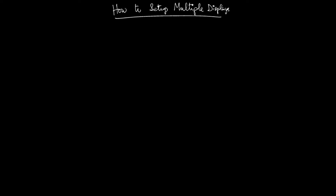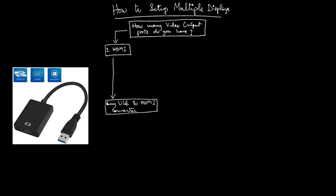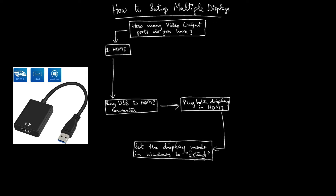Here is how to set up multiple displays. First, check the video output ports on your laptop or PC. If you have one HDMI port, you can get a USB-to-HDMI converter. Connect your external displays using HDMI input, then set your Windows display mode to Extend.